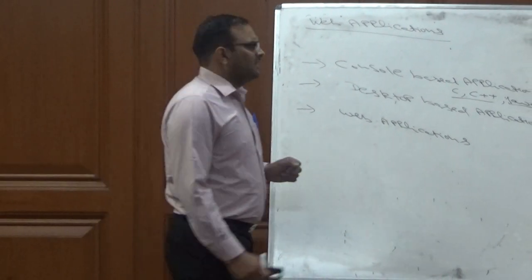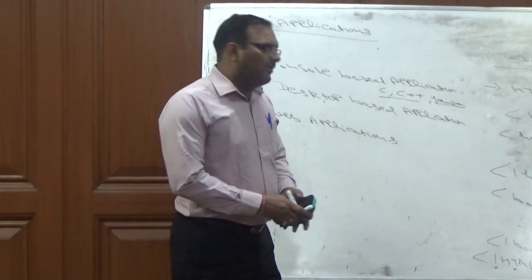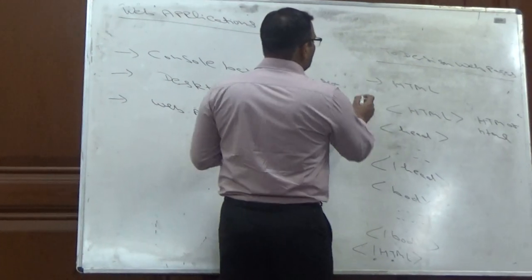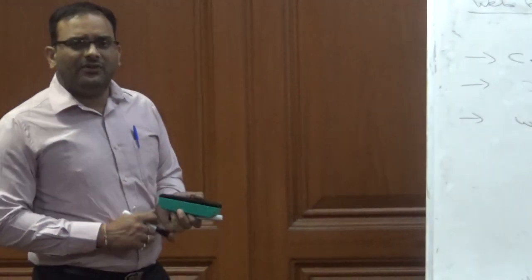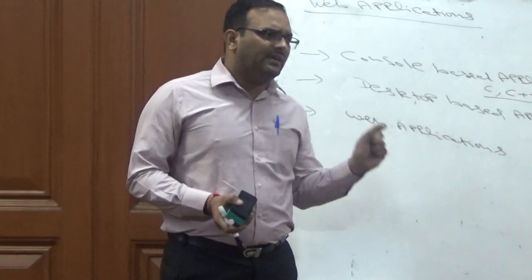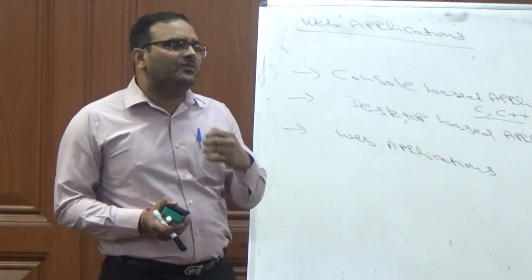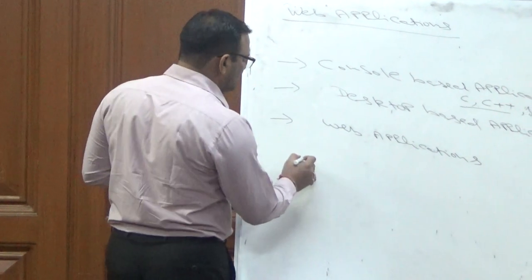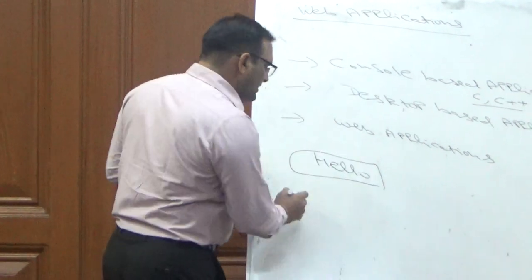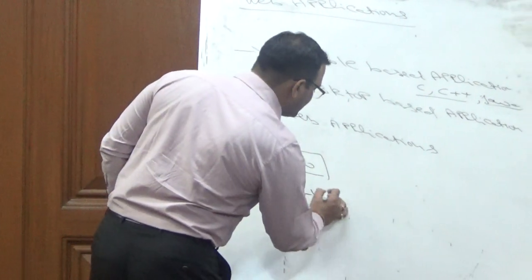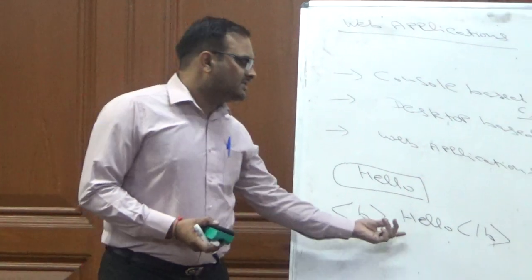Another restriction of HTML is that through it we can design only static web pages. If we want dynamic pages, then we have to use DHTML — Dynamic HTML. HTML stands for Hypertext Markup Language. Hypertext means text that is linked to another text, and markup means marking a particular text to be displayed. For example, if we want text to appear in bold, we use the bold tag inside HTML.